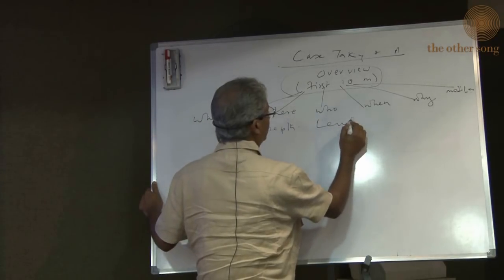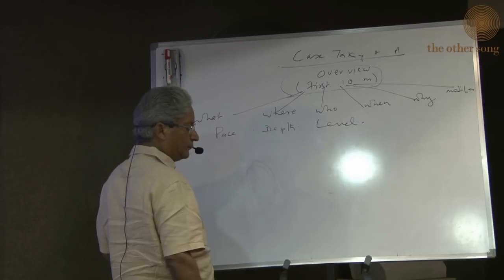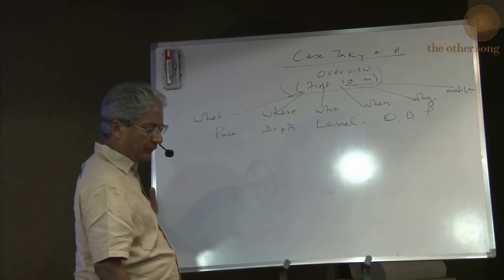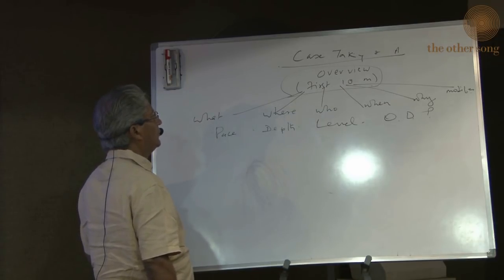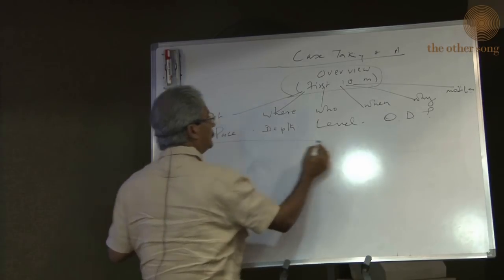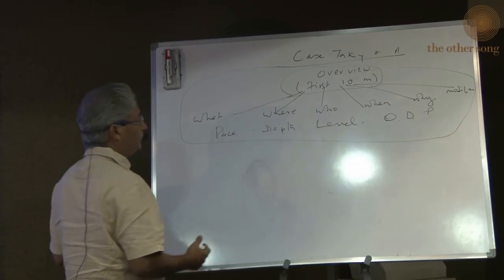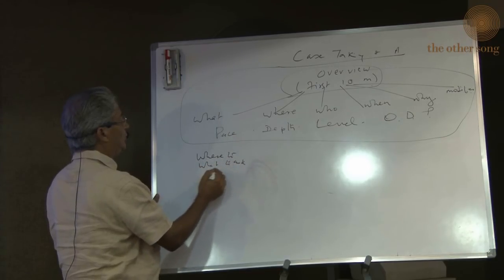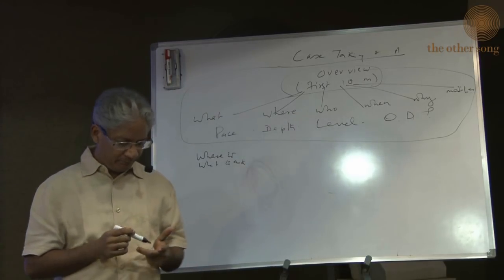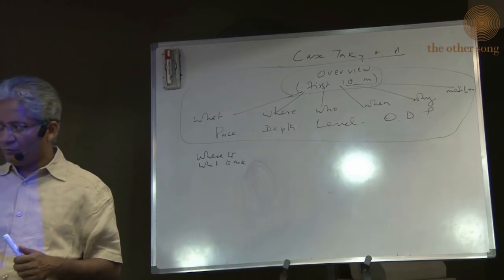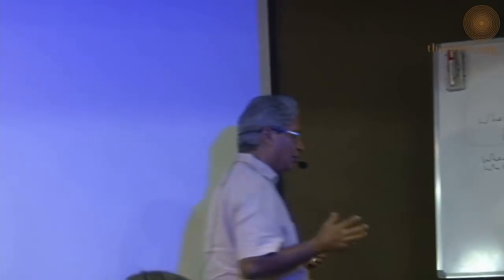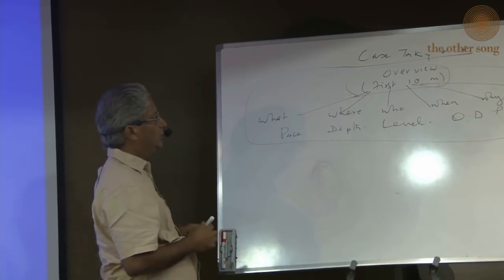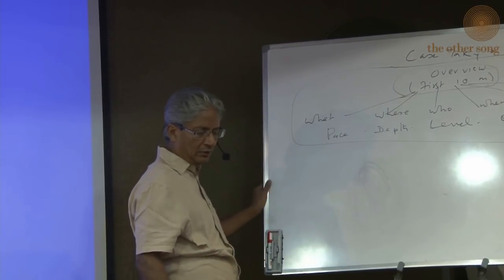What is the level of the problem? What is the origin, duration, and progress of the problem? How did it start? How did it progress? This is the first, most important step of case taking. In these ten minutes, you are going to get an idea of where to go, what to ask, what to expect, what kind of remedy you are looking for, what level it is, and where you are going to get the clarity.